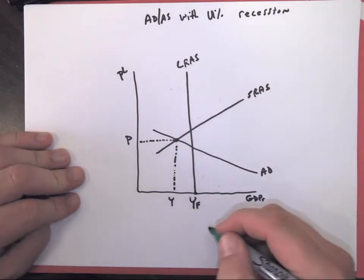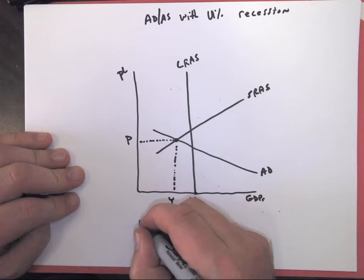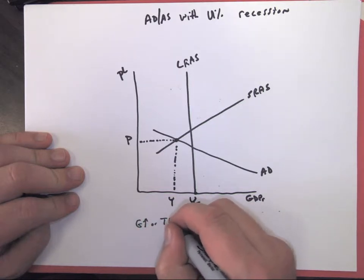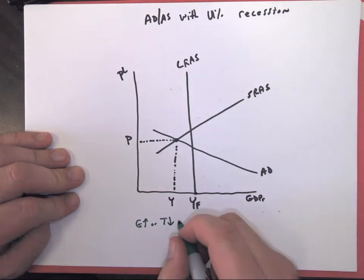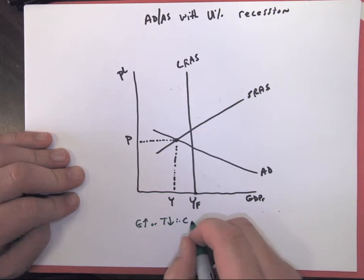So our two possible policies is going to be government spending going up or taxes decreasing. Remember, when your taxes decrease, that makes your paycheck bigger. So taxes decrease, therefore, consumption will go up.